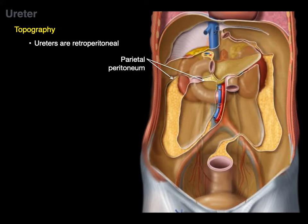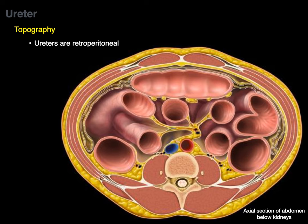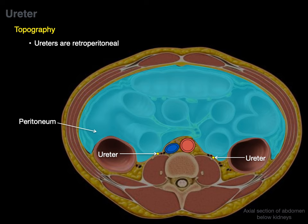In this coronal section with the GI tract removed, we can see the parietal peritoneum where it's been cut, where it becomes mesentery. Behind the parietal peritoneum is the kidney, and the ureter travels down all the way into the pelvis where the bladder is. In this axial section of the abdomen taken below the kidneys, the ureters are retroperitoneal — behind the peritoneum — along with the IVC, the aorta, and the psoas major muscles.